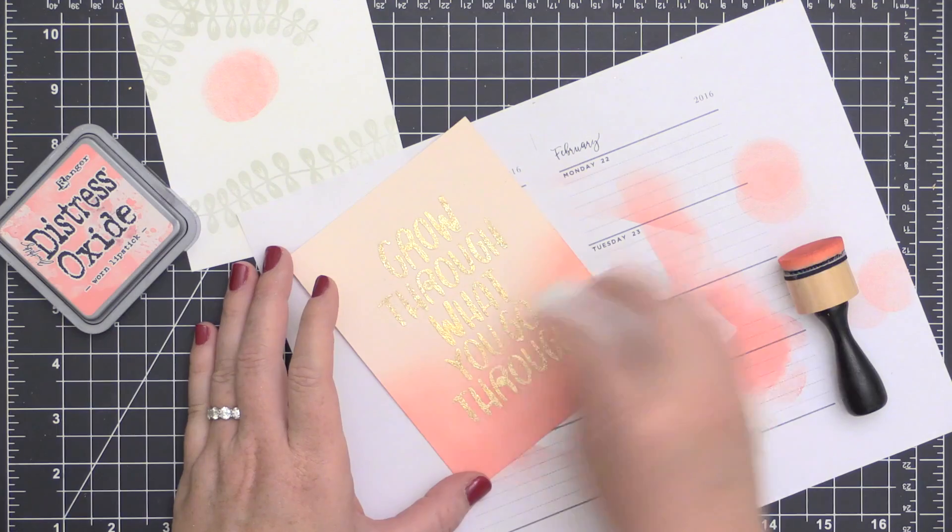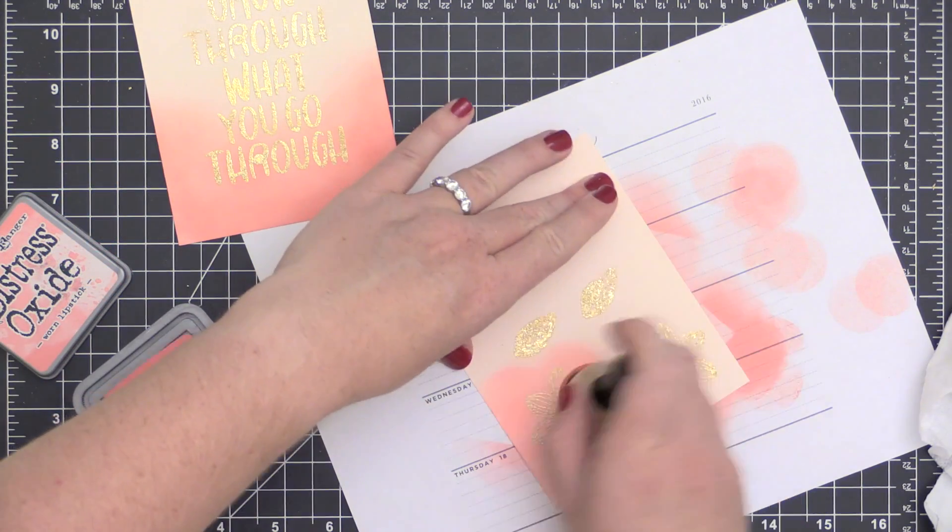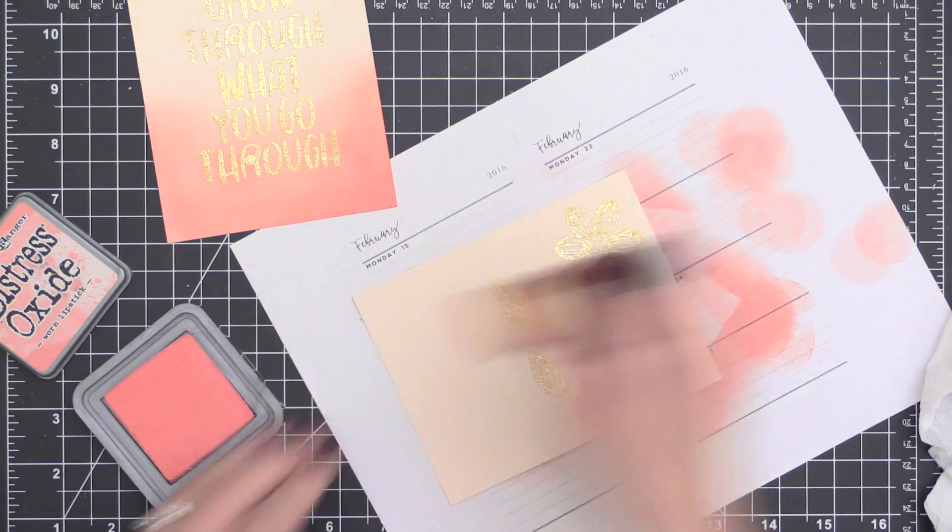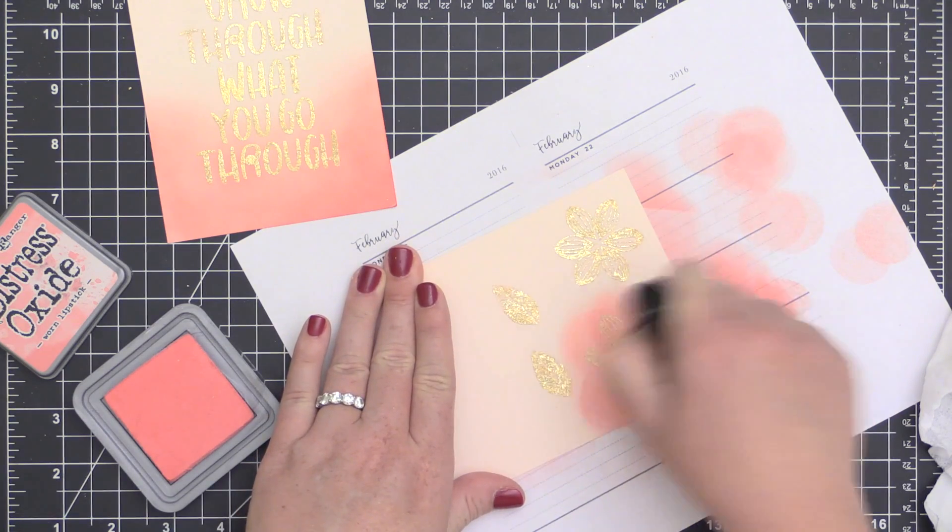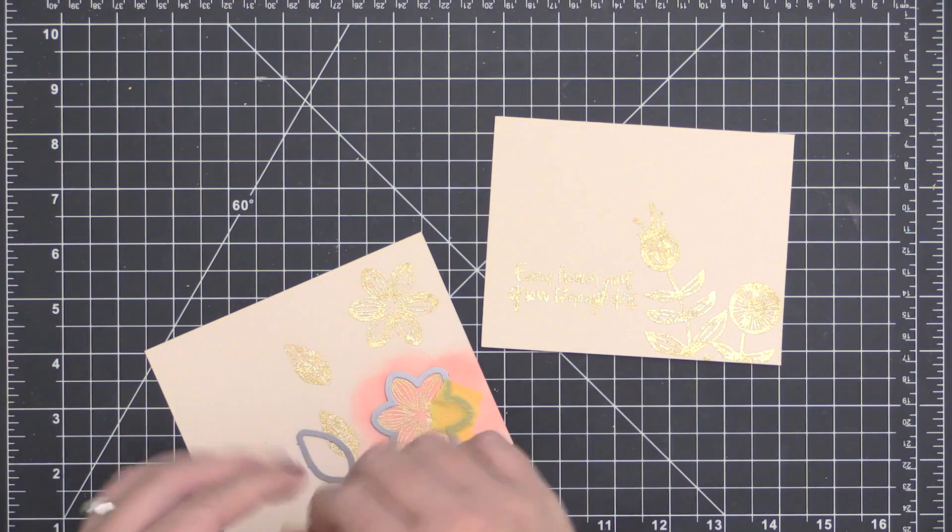I've taken this panel here and blended some Distress Oxide ink up from the bottom. Then I took a barely damp baby wipe and wiped away the ink that was sitting on top of my gilding so that it would be nice and shiny.